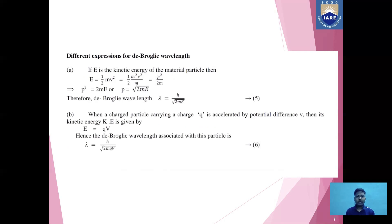Now let us discuss different expressions for De Broglie wavelength. If E is the kinetic energy of the material particle, then E = ½mv² = p²/2m, so p = √(2mE). Therefore, De Broglie wavelength λ = h/√(2mE). When a charged particle carrying charge q is accelerated by a potential difference V, its kinetic energy is E = qV. Hence, the De Broglie wavelength associated with the particle is λ = h/√(2mqV).